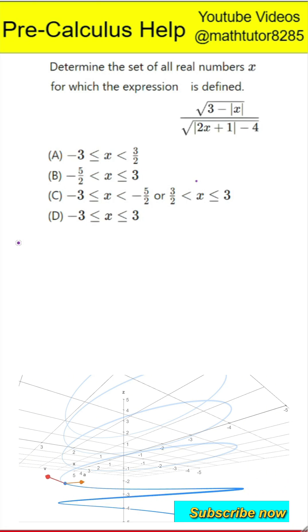Which values of x make the expression the square root of 3 minus the absolute value of x, divided by the square root of the absolute value of 2 times x plus 1 minus 4, a valid real number?